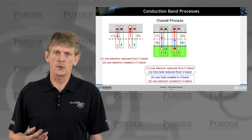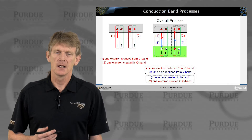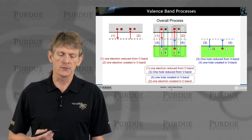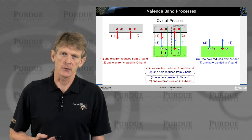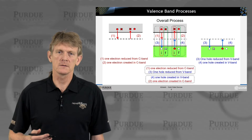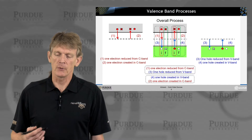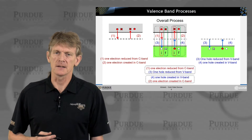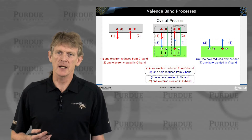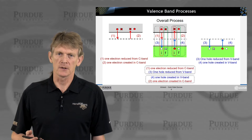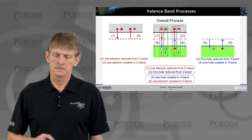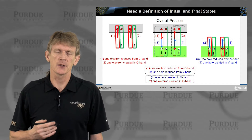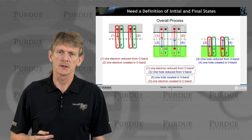The way to do that is to be very explicit about the existence, behavior, and temporal behavior of these traps. We're going to divide these four processes into electron-and-trap processes and hole-and-trap processes. On the left, we see one electron being reduced from the conduction band and one electron being created in the conduction band, mediated by a trap — the word 'hole' doesn't show up in this description. On the right, we see one hole being reduced from the valence band and one hole being created in the valence band, mediated by a trap, with no electron involved.